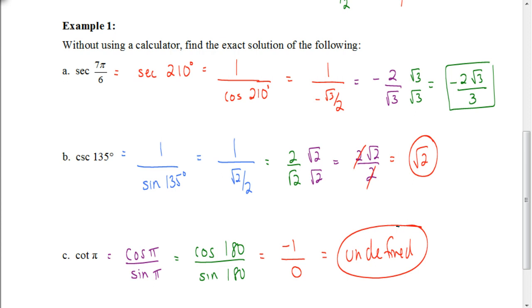And there you have it — the secant, the cosecant, and the cotangent functions. Again, a pretty easy, simple concept. You just have to remember that the secant is the reciprocal of the cosine function, and the cosecant is the reciprocal of the sine function. That's the trickiest thing about this, but otherwise it's pretty simple. Good luck on your assignment.